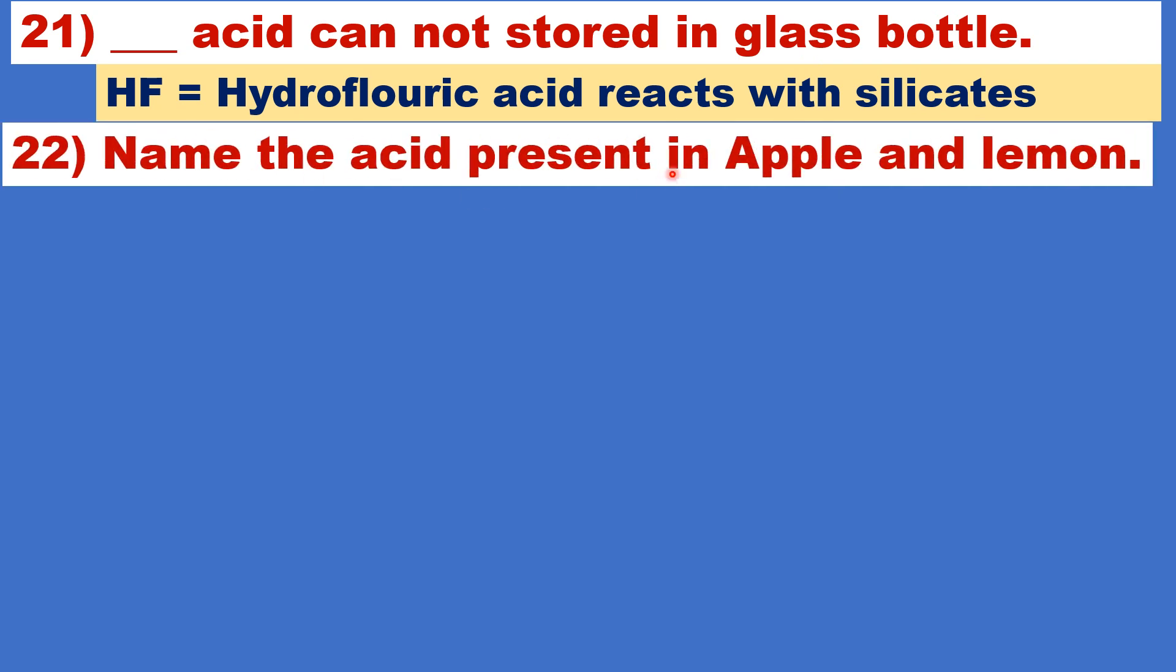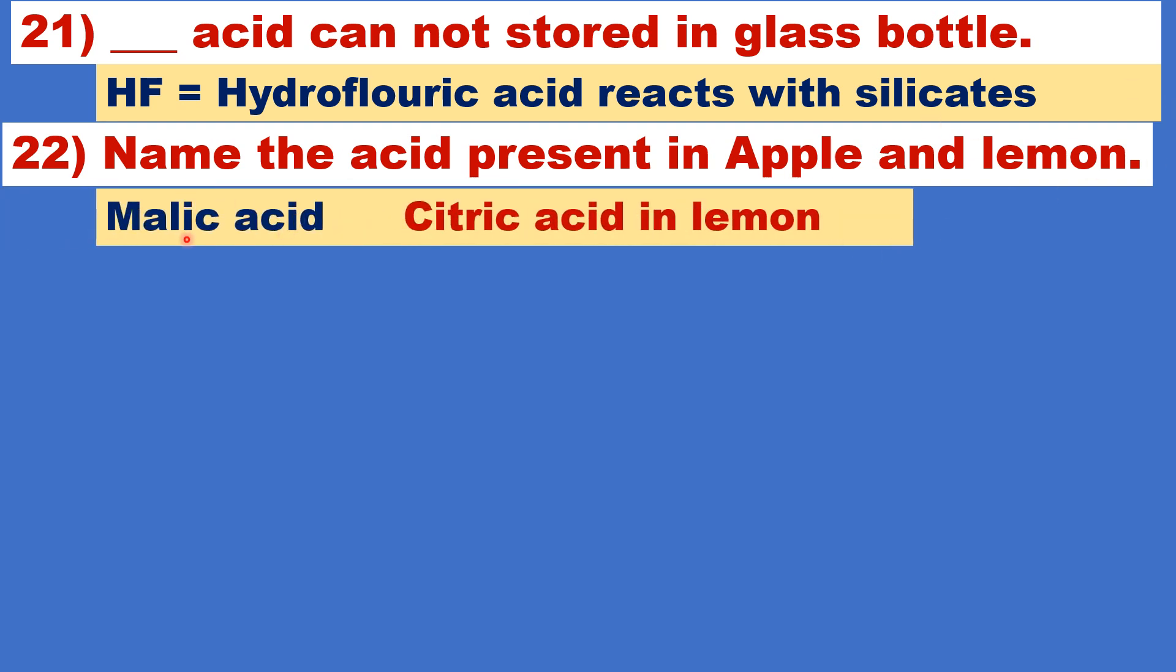Name the acid present in apple and lemon. In apple, malic acid is present in large quantities. In lemon, citric acid is present. Citrus fruits, orange, lemon, they are citrus fruits. Citric acid is present.